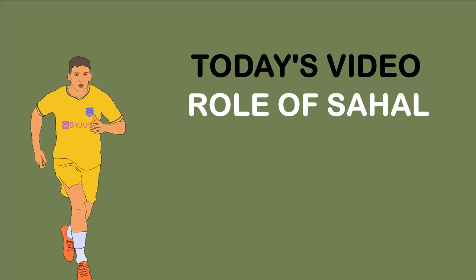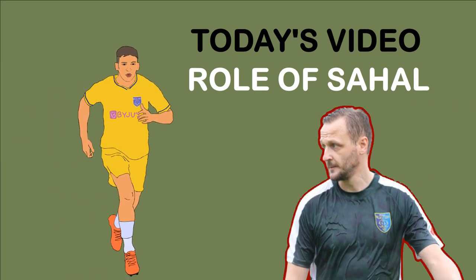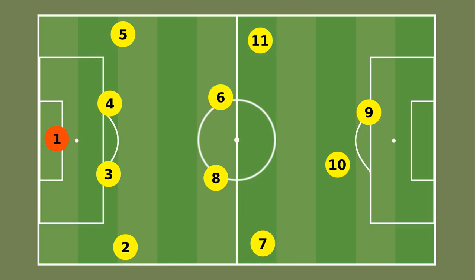Welcome back to Kerala Blasters TV. In this video we will discuss the role of Sahal in Evance Kerala Blasters. The coach used Sahal in 3 positions: in the number 10 role, as a winger, and in the number 8 role. Let's look at each position in detail.